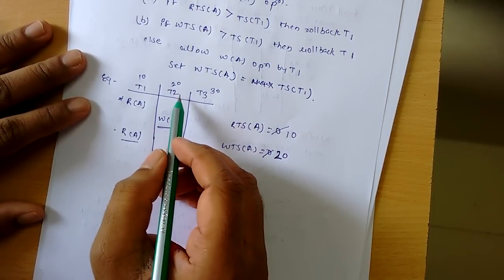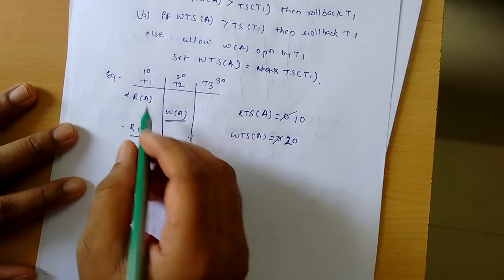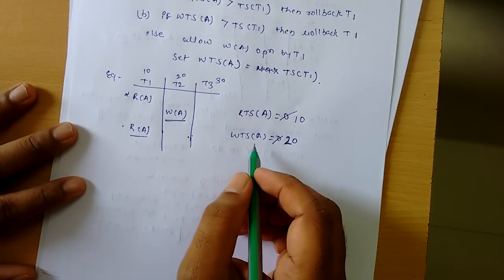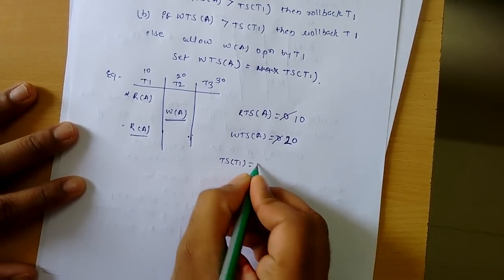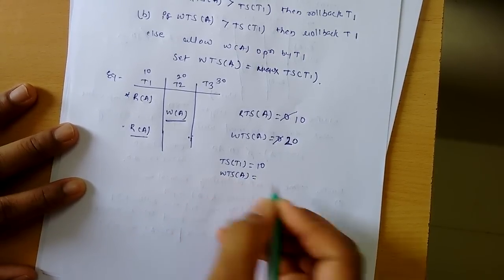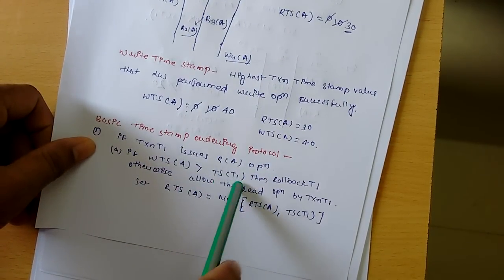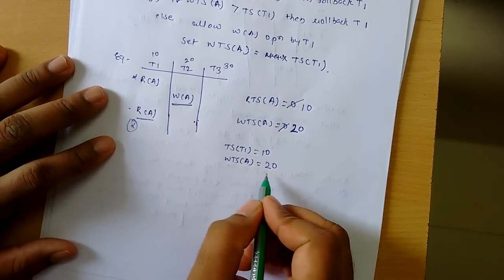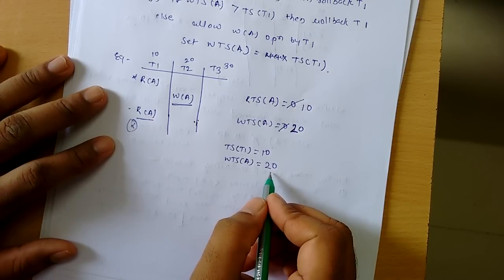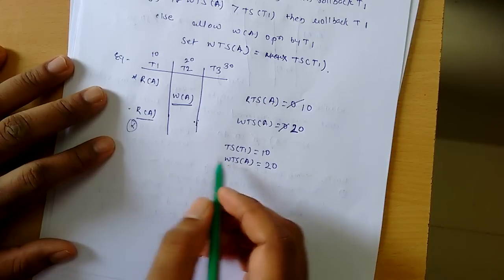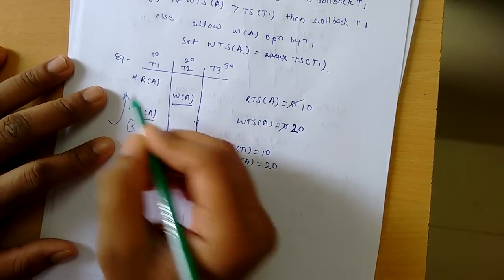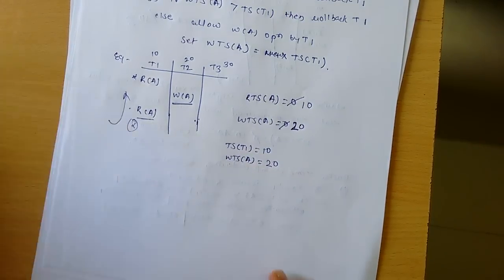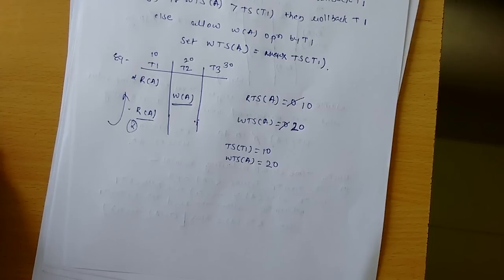The write timestamp of A is now 20. Now T1 applies a read operation on A. We check: is WTS(A) greater than timestamp of T1? WTS(A) is 20 and timestamp of T1 is 10 — yes, this is true. So this operation is not allowed because a younger transaction has performed a write operation on data item A, and it cannot be read by an older transaction. We must rollback T1. That's all about basic timestamp ordering protocol — hope it helps, thanks for watching.